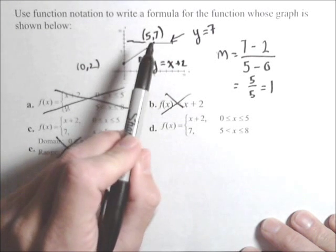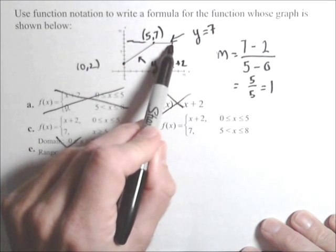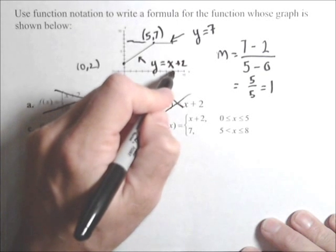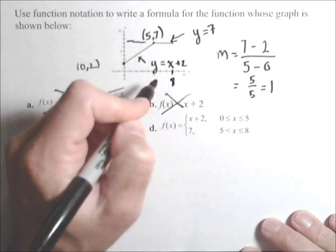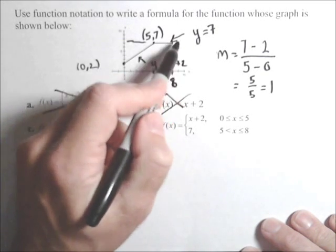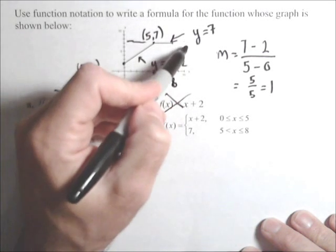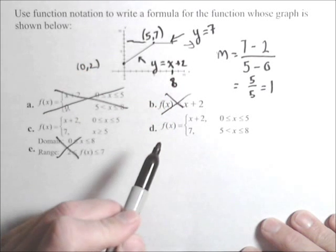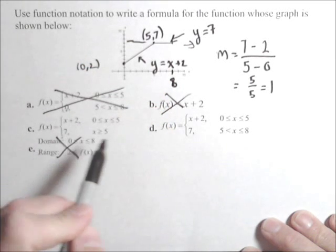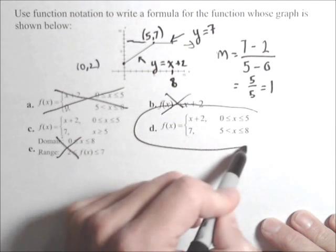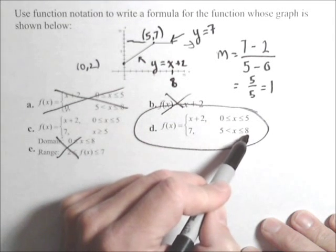Now 7, and this is interesting, notice there's a closed circle here. So 7 only goes from 5 to right here, which is 8, and then the graph ends. So here, the problem with C is the graph would need to keep on going in this direction. So it's not C, but actually D, because D does end at 8.